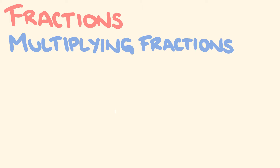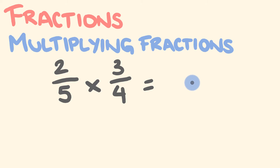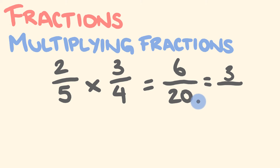Now a harder example: what is two-fifths multiplied by three-quarters? The idea is the same — numerator times numerator, then denominator times denominator. Two times three is six, five times four is twenty. However, this fraction can be simplified: two goes into both six and twenty, giving three over ten. So six over twenty simplifies to three-tenths.